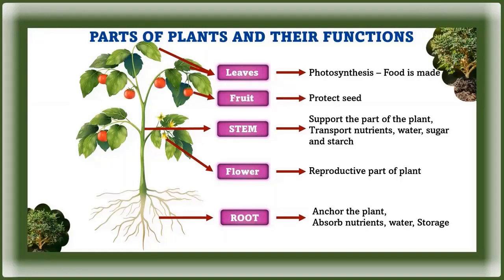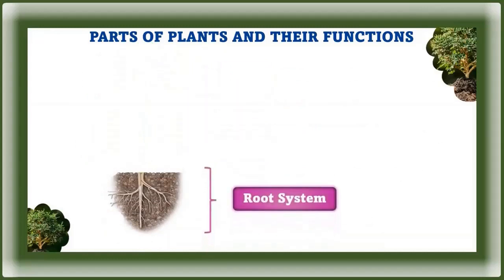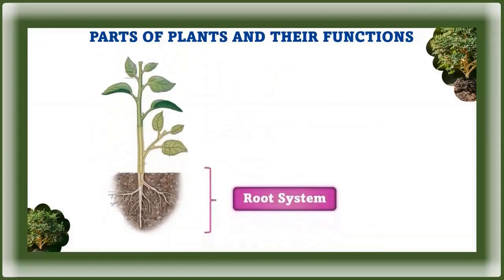Fruits are the fleshy substance that usually surrounds seeds; they protect the seeds. Seeds contain plant material that can develop into another plant — this plant material is called an embryo. Plants have two distinct systems: a root system and a shoot system.